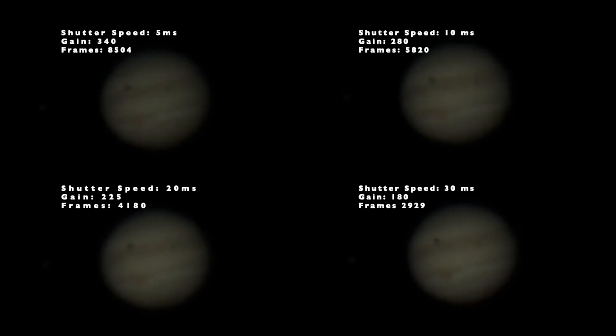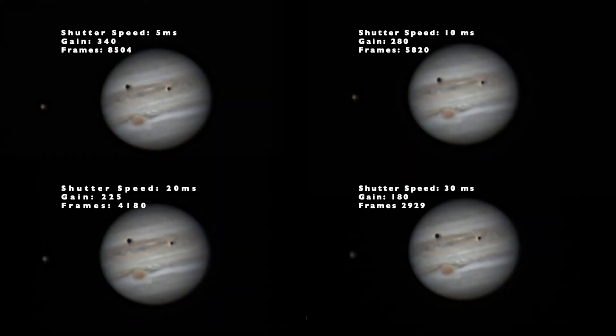I processed everything in AutoStakkert, stacking 40% of the frames, then applied wavelet sharpening with the exact same settings in Registax for all four cases. The results are a little over-sharpened — you can see artifacts around the shadows of Io and Ganymede. The 5 millisecond capture was far and away the most noisy, while the 30 millisecond one blurred things out, especially Ganymede. The 10 and 20 millisecond captures gave the best, most optimal outcome between those extremes.